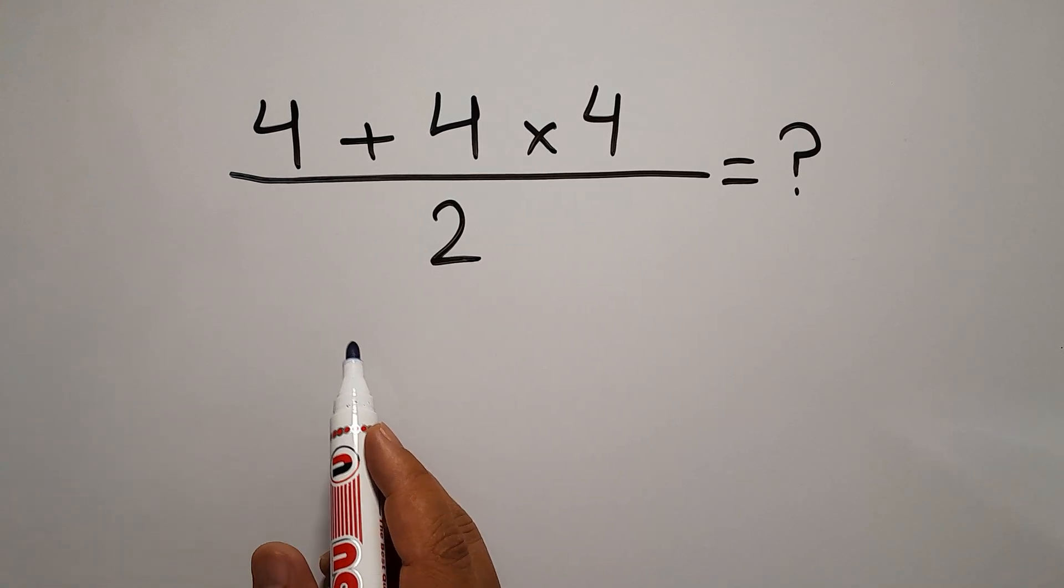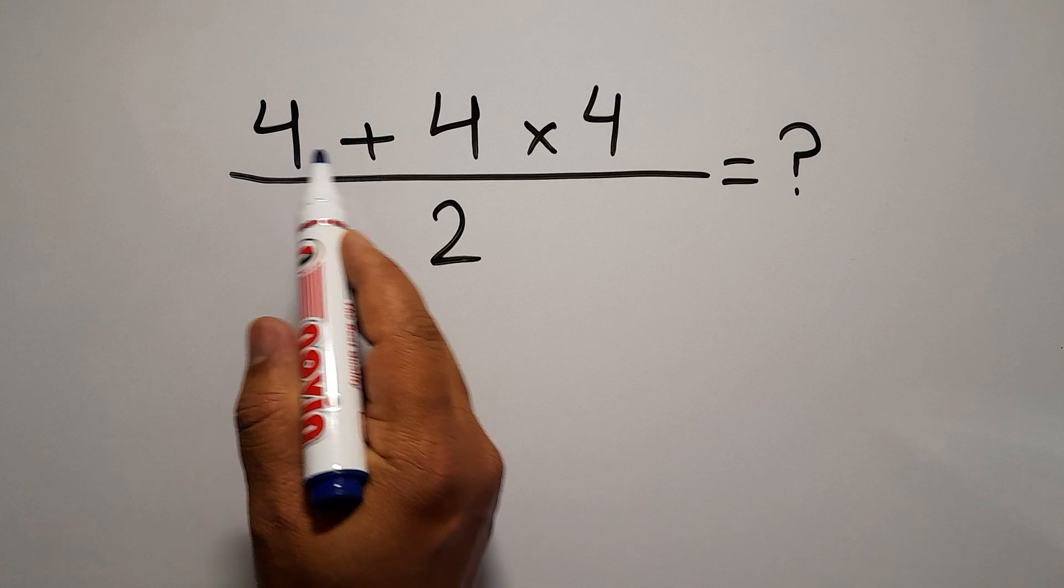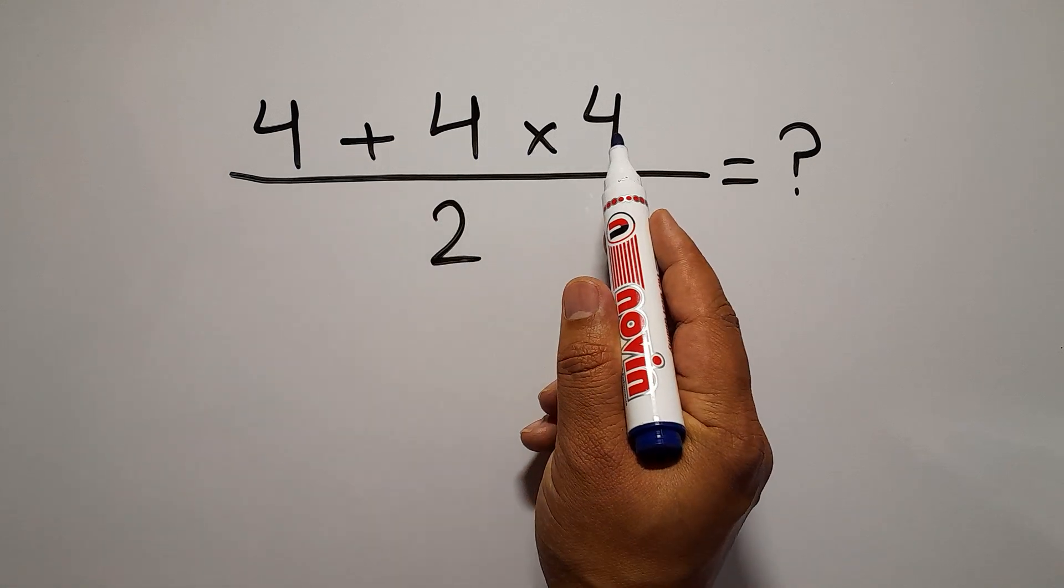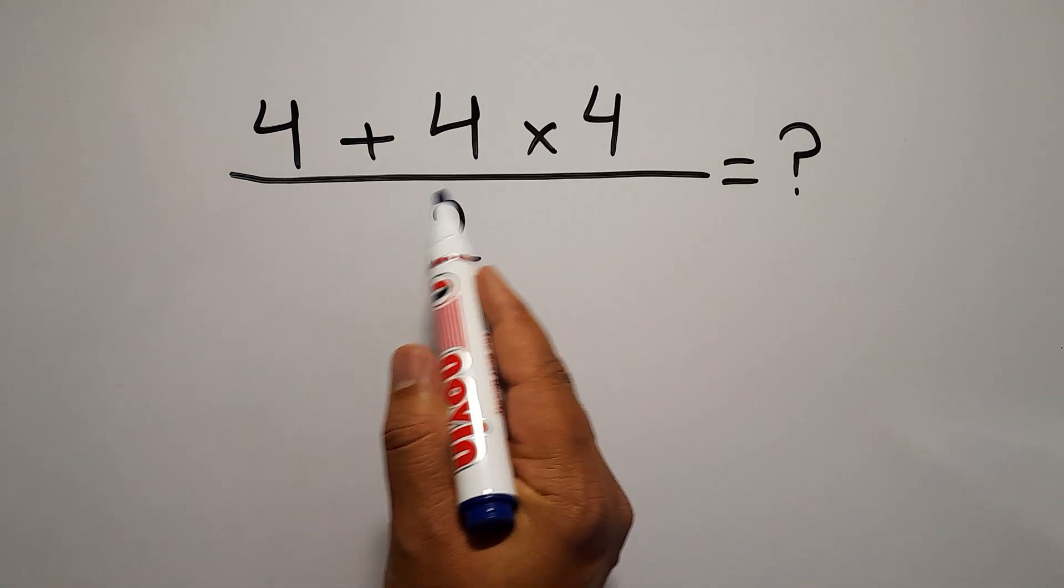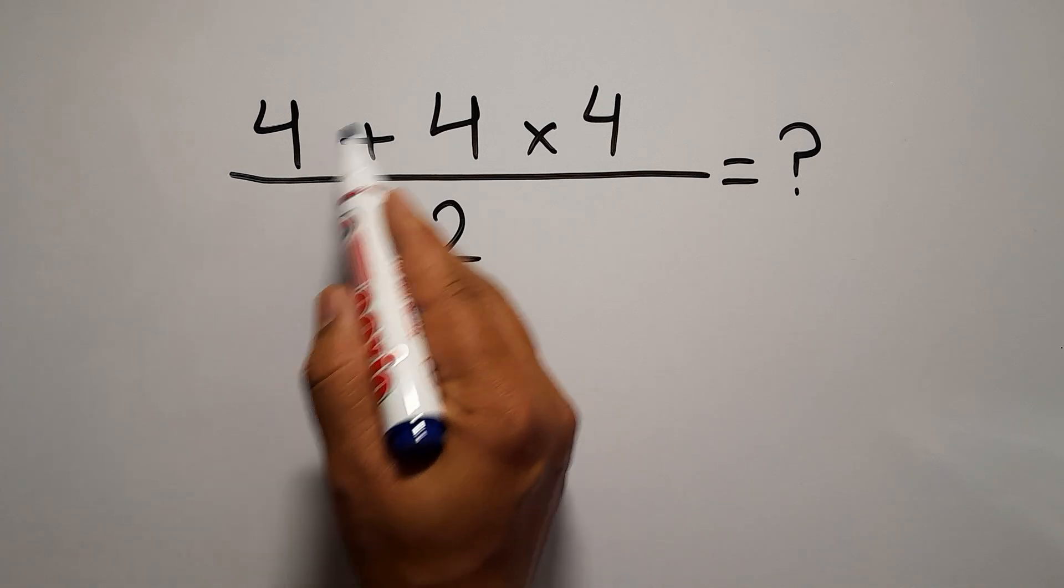Hey guys, welcome to MapJoy. In this video we want to find the value of this fraction: 4 plus 4 times 4, over 2. Are you ready to solve? Let's go. To start, instead of this fraction, we can write the numerator in parentheses—4 plus 4 times 4—divided by the denominator.